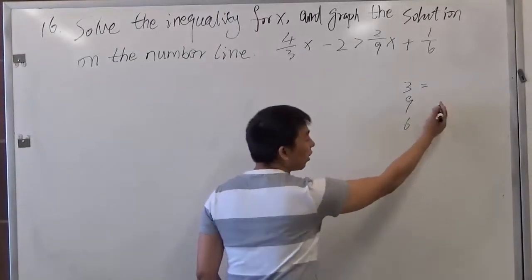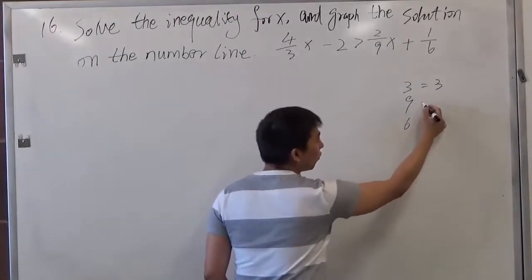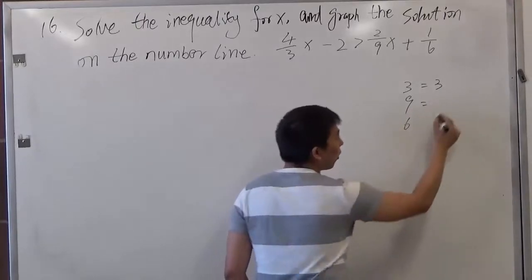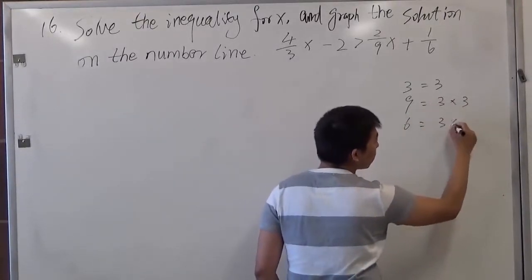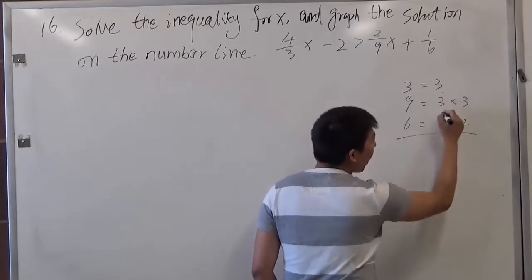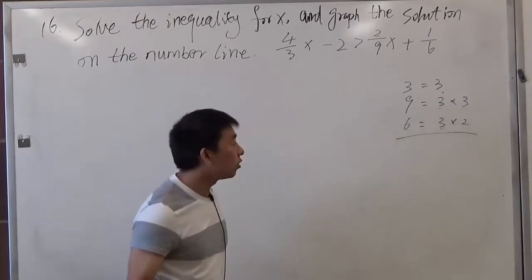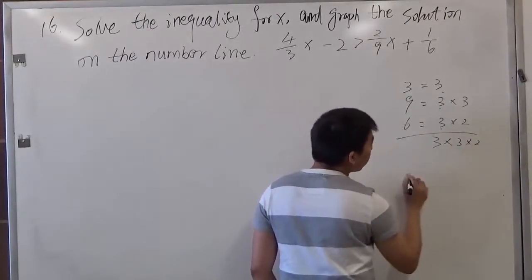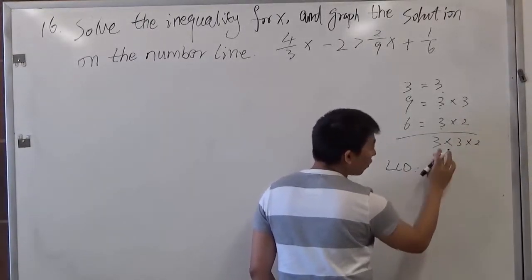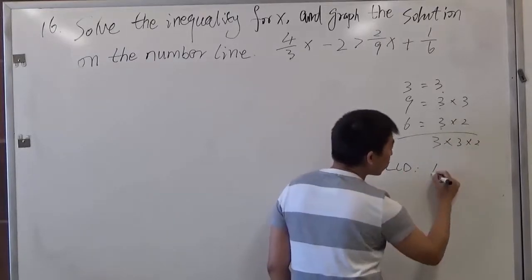So 3 is a prime number, you can do nothing about it, just 3. 9, we can write as 3 times 3. 6, we can write as 3 times 2. As you can see, we have a common factor 3 here, and 1 extra 3, and also 1 extra 2. So the LCD would be 3 times 3 times 2. That gives us 18.